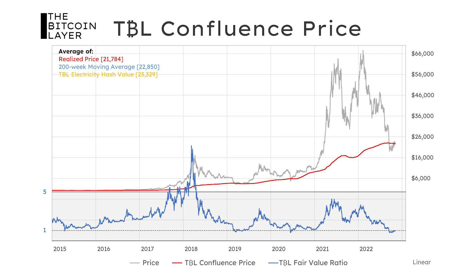The third thing to note is how high the fair valuation ratio can get. Last year, we saw this ratio reach four — in today's context, that would be an $80,000 price of Bitcoin given where our confluence price is today. So Bitcoin can get extremely stretched relative to its fair value. This is an important point: we can't just use the fair value ratio to tell us what Bitcoin will trade at all the time. Instead, we have to use it as context for where Bitcoin is trading today.